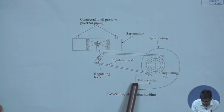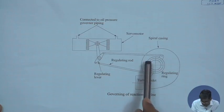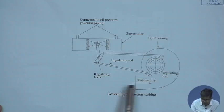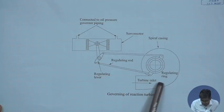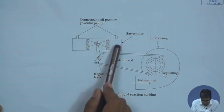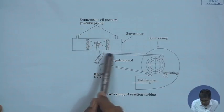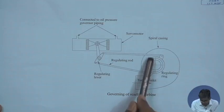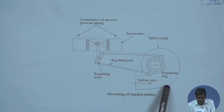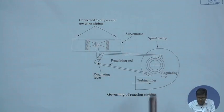The mass flow rate through the scroll casing remains the same overall, but when the system demands an altered mass flow rate — reduced when the load is reduced, increased when the load is increased — this is controlled through actuation of the oil pressure governor, via the lever, regulating rod, and regulating ring. This is how the control of all reaction machines is done.